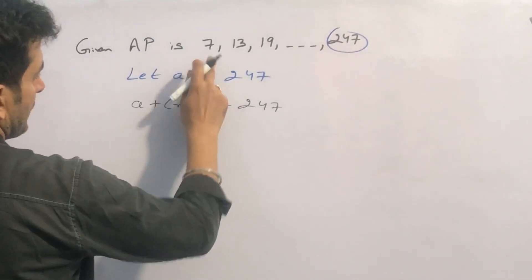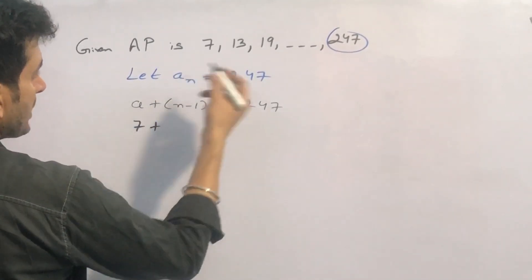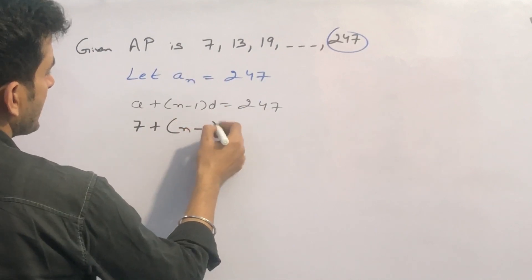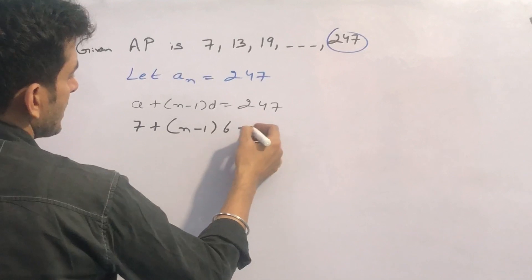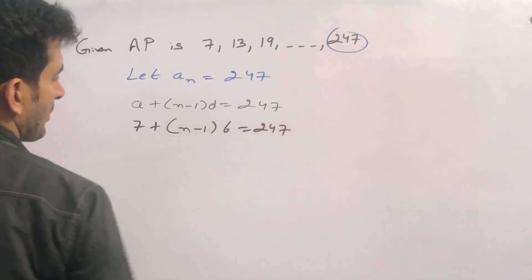So A is the first term. So first term is 7 plus N minus 1. This is N minus 1. In place of D, 13 minus 7 is 6, equal to 247.